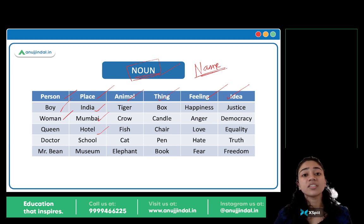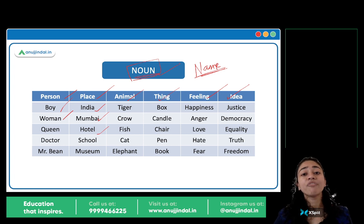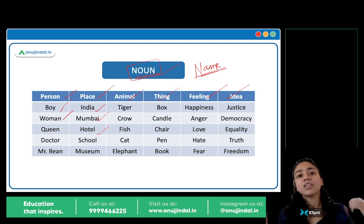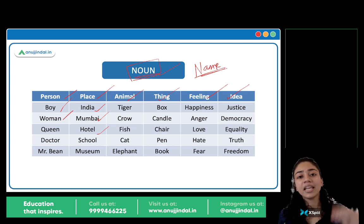Idea: justice, democracy, equality, truth, freedom, loyalty — sare nouns hai. Toh any name is a noun — jo bhi naam hai, if it's a name, it's a noun.